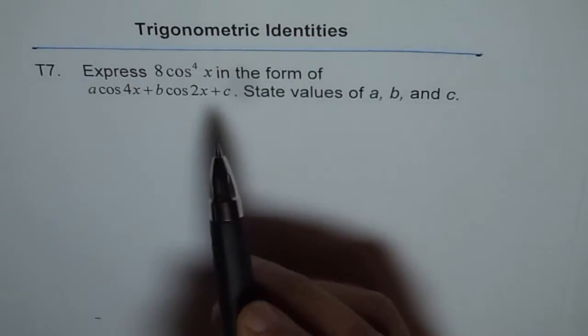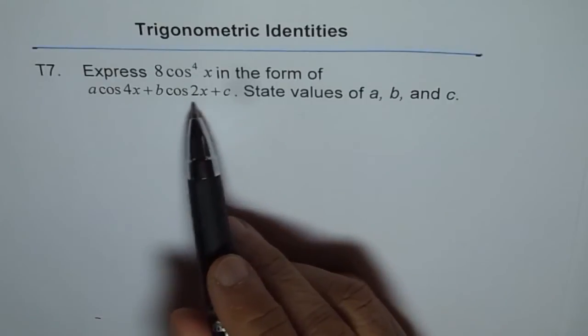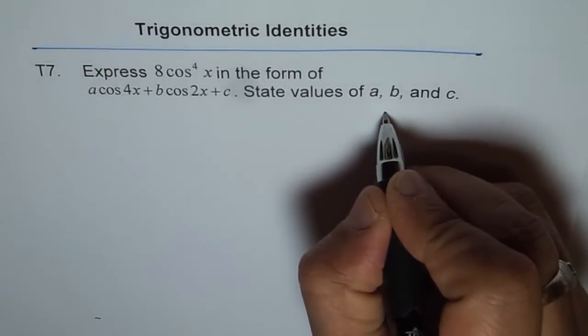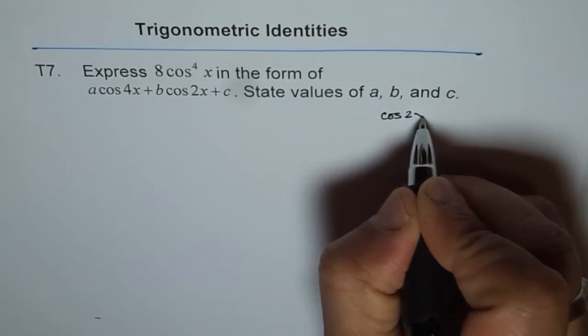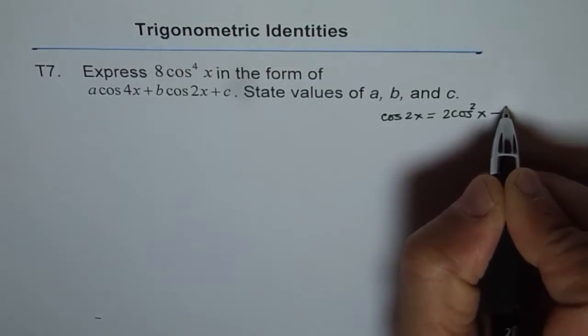Well, since we have to convert into cos 2x form, let's again look into the formula of cos 2x. Let me write it down here for you. We know cos 2x is equal to 2 cos square x minus 1.